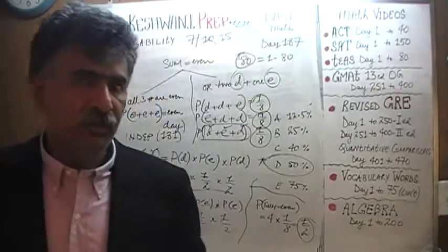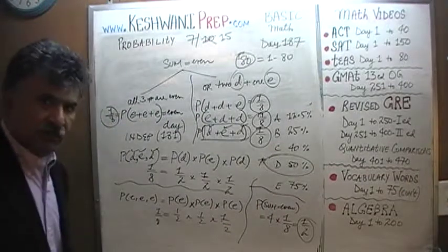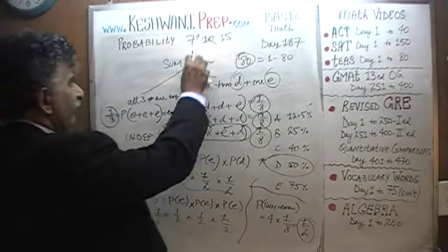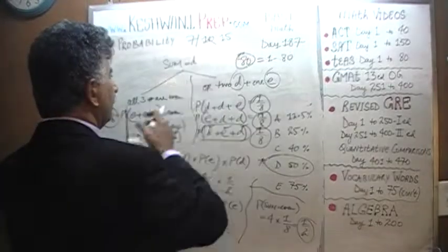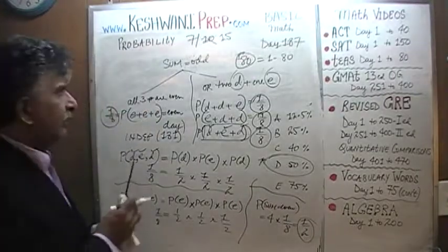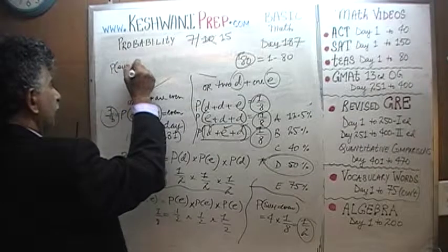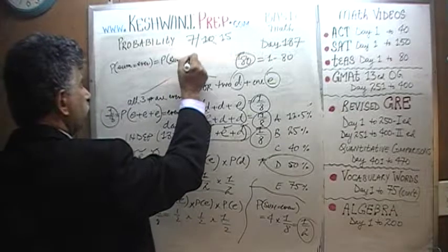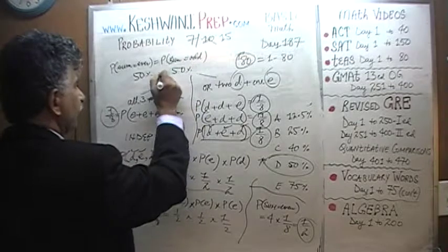Before we close the video, I want to point out two things. First, had they asked the exact same problem but asked for the probability that the sum is odd, the answer would still be the same — fifty percent. The probability of the sum being even is the same as the probability of the sum being odd: fifty percent, no difference.